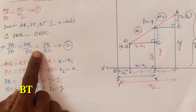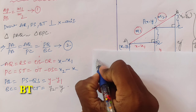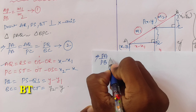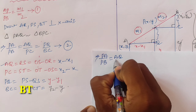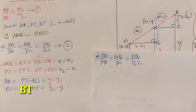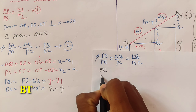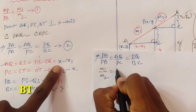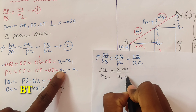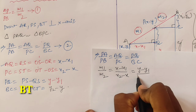By substituting into equation number two using the similarity ratio, we write: m1 by m2 equals AQ by PC equals PQ by BC, which gives m1 by m2 equals (x minus x1) by (x2 minus x) equals (y minus y1) by (y2 minus y).